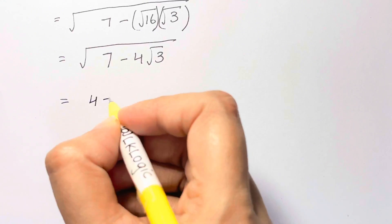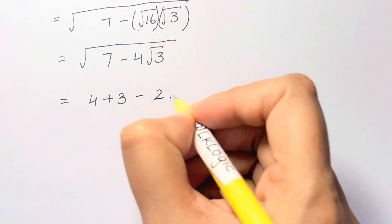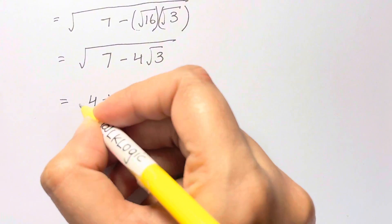Now 7 can be written as 4 plus 3 minus 4 can be written as 2 times 2 then root 3 under the root.